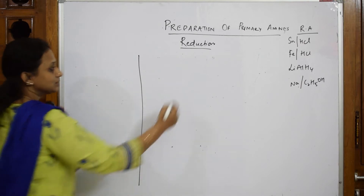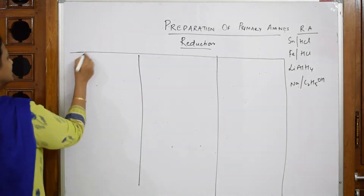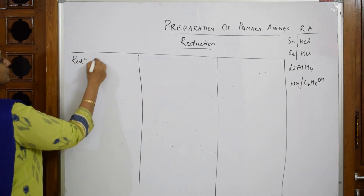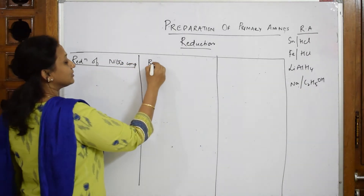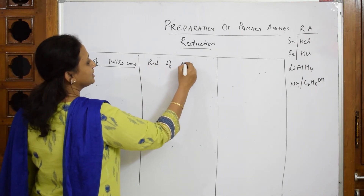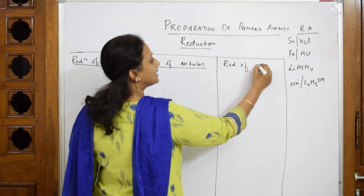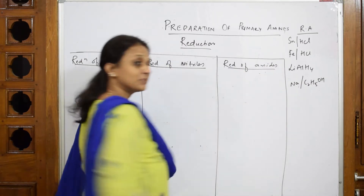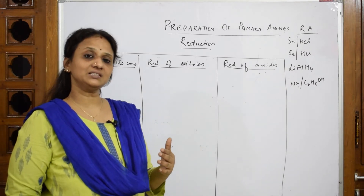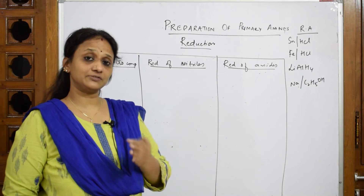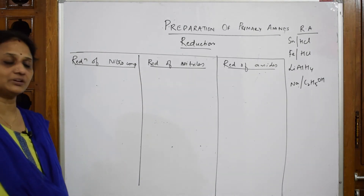I have to prepare primary amines by reduction of three important products. First, the reduction of nitro compounds. Second, the reduction of nitriles. Third, the reduction of amides. This is how it is given in your textbook. Yesterday we studied the first category, and I further went on teaching preparations of amines, BDC, and different types of reactions. Let us come back and learn further preparations of amines.